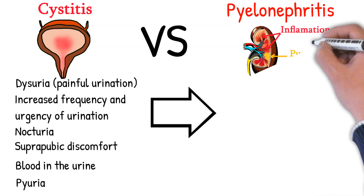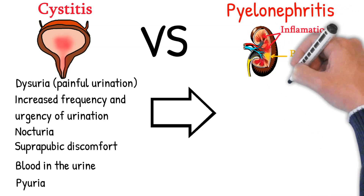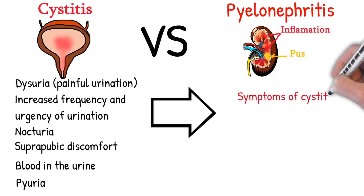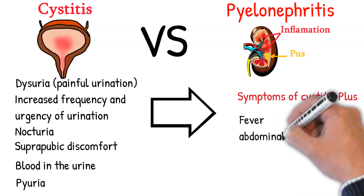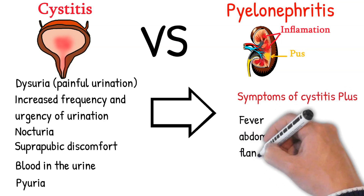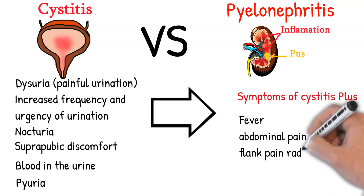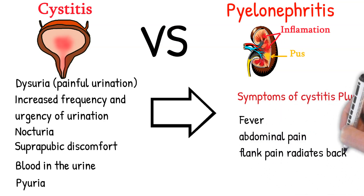Symptoms of pyelonephritis: In addition to the symptoms of cystitis, fever and abdominal pain along with flank pain radiating to the back, and vomiting.